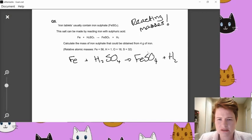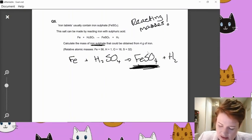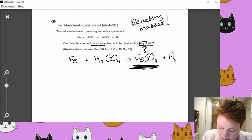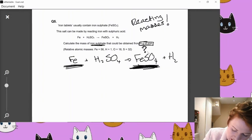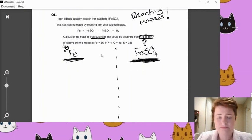Let's highlight the important bits from the question. Calculate the mass of iron sulfate. That's this thing. So that's the thing that I'm trying to work out. That can be obtained from four grams of iron. So there's the iron and I've got four grams of it. And they've actually given us here the relative atomic masses of them anyway. So I don't even have to double check with the periodic table. So just to make things a little bit easier for me, I am just going to rub out the bits that I don't need.